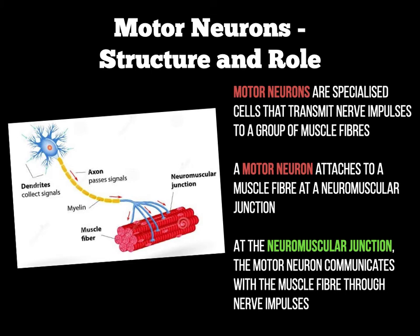Here is a good picture of a motor unit. A motor unit is the motor neuron and a muscle fibre — that's very critical to write down. If you want to alter your image of the motor neuron and add a muscle fibre in, this is what we mean by a motor unit.